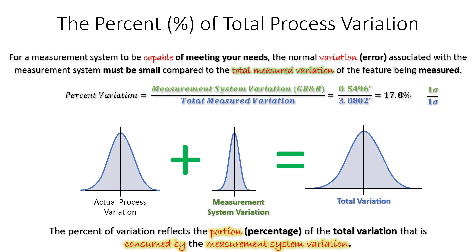One thing to note: unlike the precision tolerance ratio where we used six sigma, here we don't do that. For percent of total process variation, we just take one standard deviation divided by one standard deviation. There's no need to do the whole six sigma or 5.15 sigma conversion — we're literally just comparing two measures of standard deviation against each other.